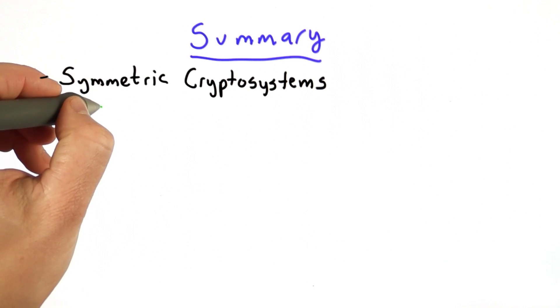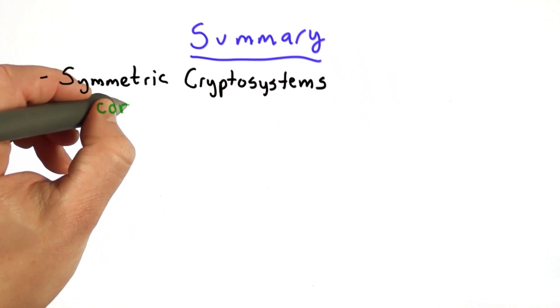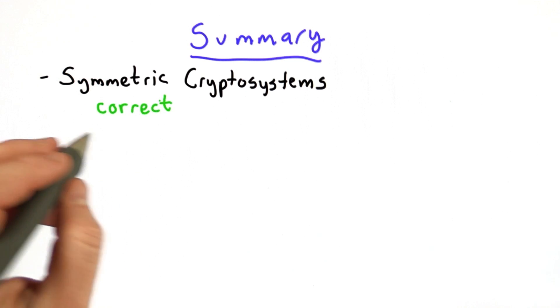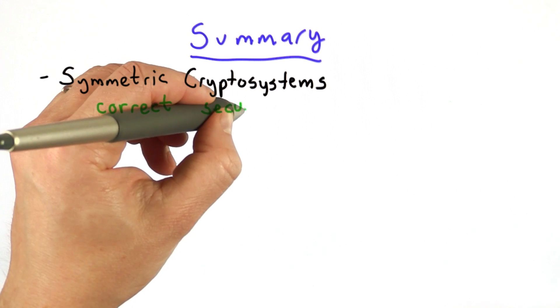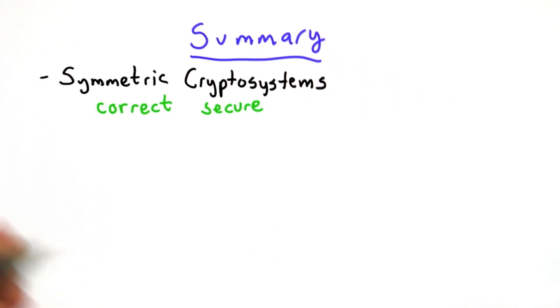In particular, we know what it means for a cryptosystem to be correct, that encryption and decryption are indeed inverses. Defining security is a much trickier thing, and we talked about ways we could define security for a symmetric cryptosystem.